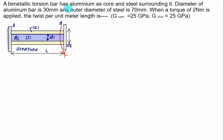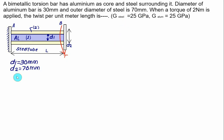A second problem: a bimetallic torsion bar has an aluminium core of diameter D1 = 30 mm inside a steel tube of outer diameter D2 = 70 mm. A torque T = 2 Nm is applied. The shear moduli for both steel and aluminium are given as G = 25 GPa each. We need to find the twist per unit length, theta/L.